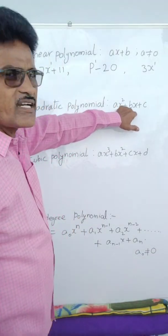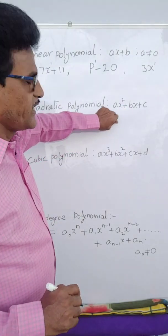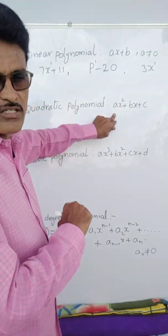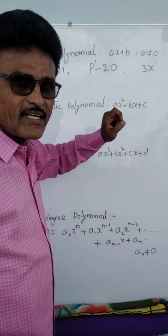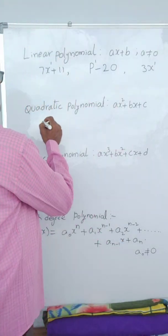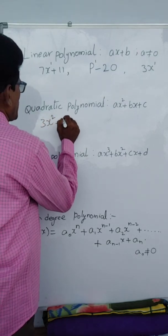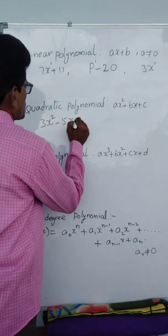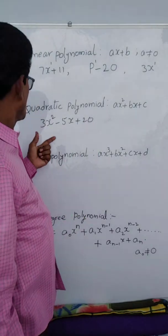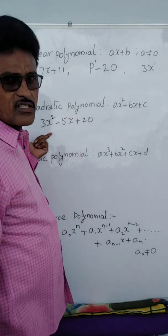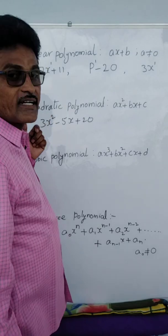Now quadratic polynomial — general form: ax squared plus bx plus c. Condition: a not equal to 0, because the ax² term must be present. Quadratic polynomial means second degree polynomial. Example: 3x² minus 5x plus 20 — this is the quadratic polynomial, meaning second degree polynomial.